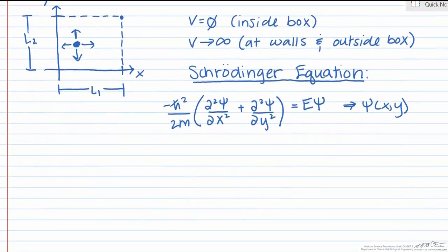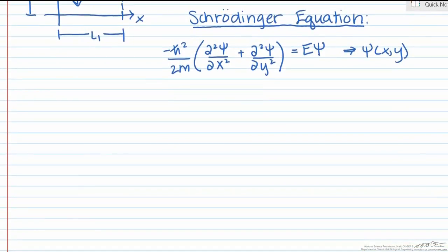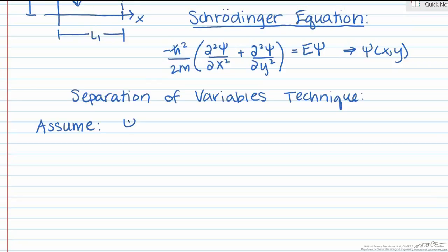In order to solve this partial differential equation, we're going to use a mathematical technique called separation of variables. We're essentially going to assume that our wave function takes on the form psi of xy is equal to a function of x multiplied by a function of y.